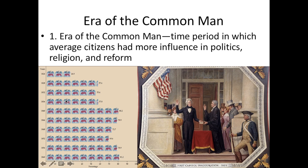You can see on the left this chart showing the percentage of Americans voting. Starting in 1824 and especially in 1828 when Andrew Jackson is elected, it keeps going up. That's because different states are instituting universal white male suffrage, so even poor white males can vote — and they vote for people like Andrew Jackson who they see as part of their group.